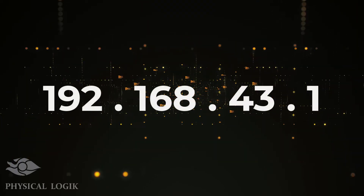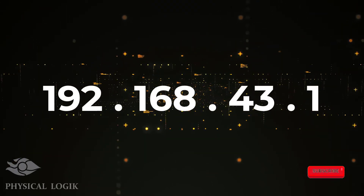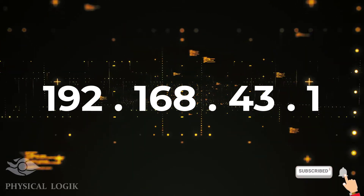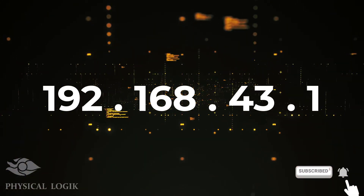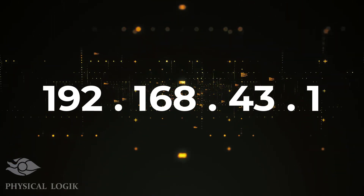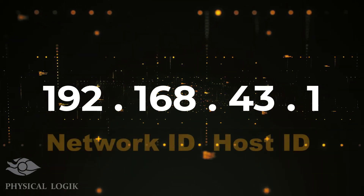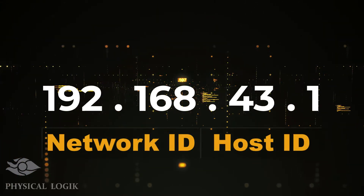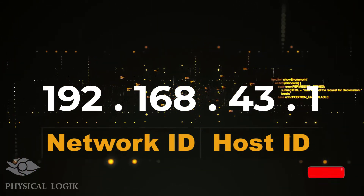Similarly, an IP address as discussed in the previous video is a 32-bit address used for network layer communication. This IP address contains two important pieces of information: the network ID and host ID components, and both are used to identify the location of a device.